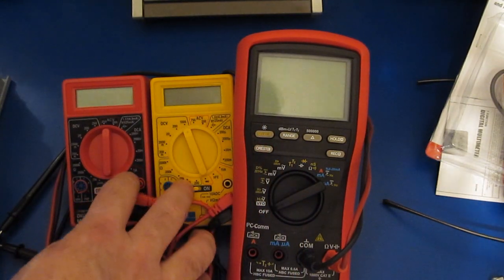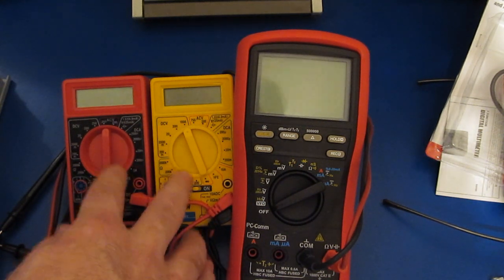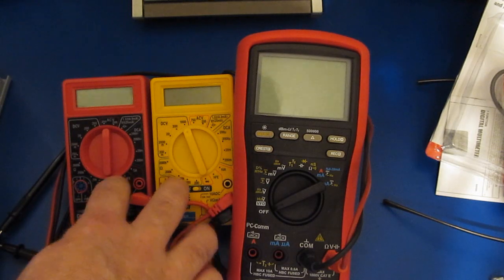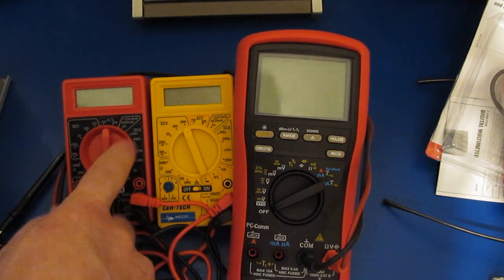So in the case of these cheap meters here, there is no high voltage resistor. There's no PTC. There's no MOVs. These are basically a no frills meter. Like I say, Harbor Freight will still give these away.